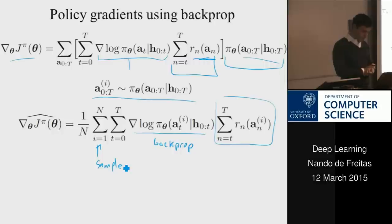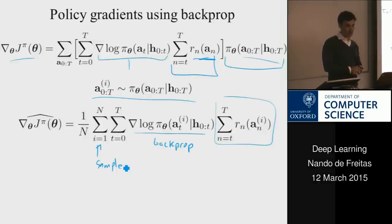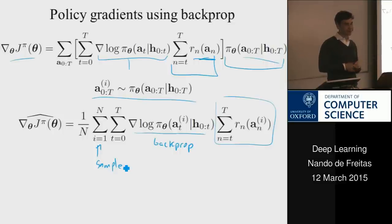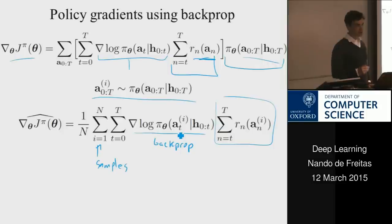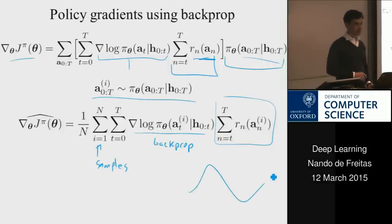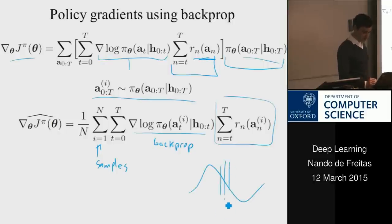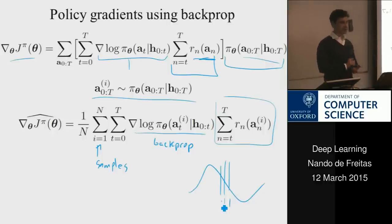One issue with this approach is that it has very high variance. Researchers devote most of their effort to coming up with low-variance estimates of this gradient. Part of why it's high variance is you're dealing with derivatives of distributions, which have a positive part and a negative part — when you use samples to approximate, positive and negative samples may cancel, wasting samples.